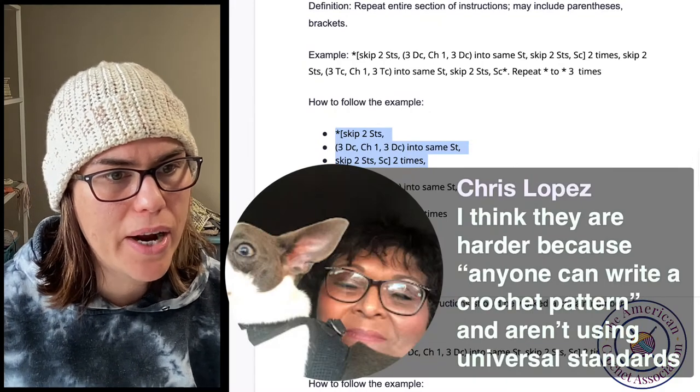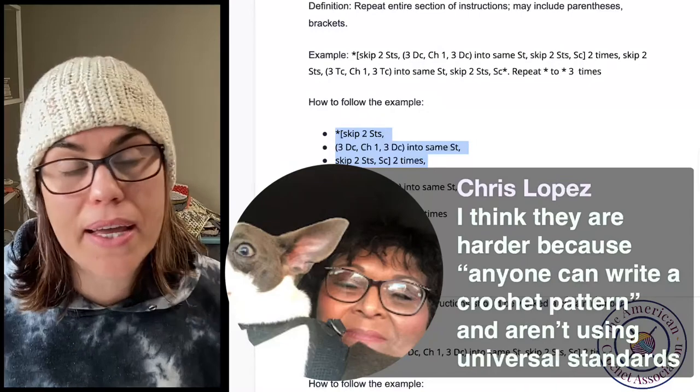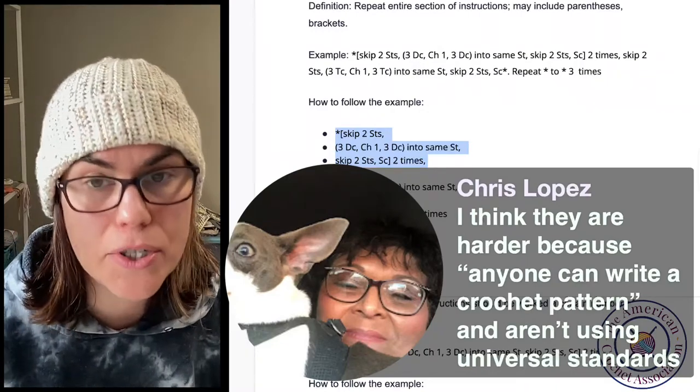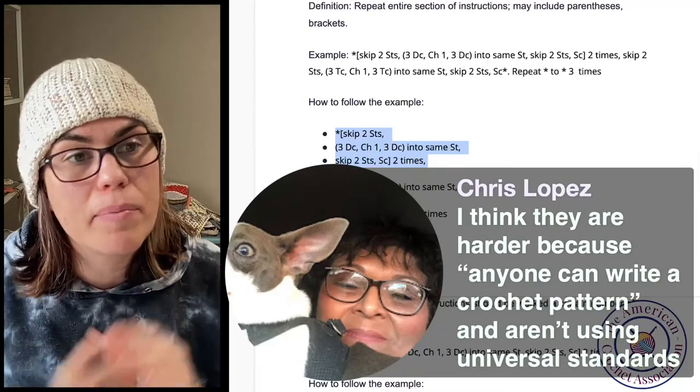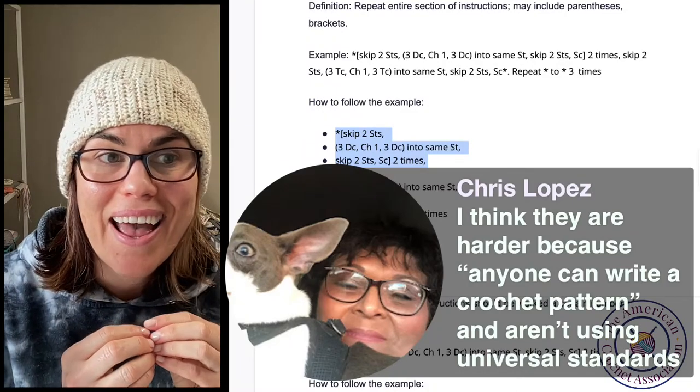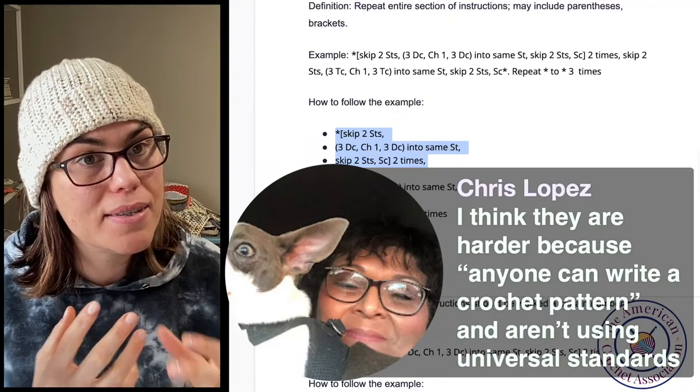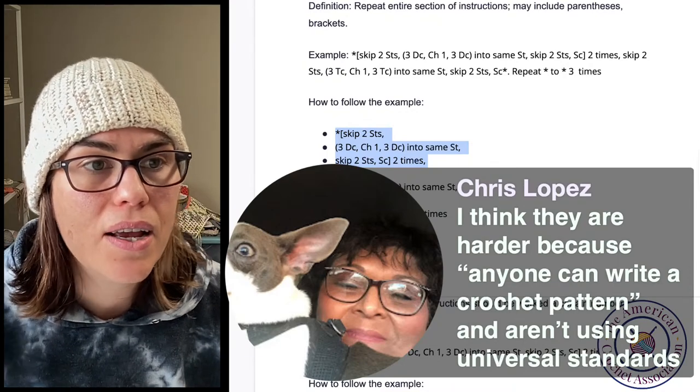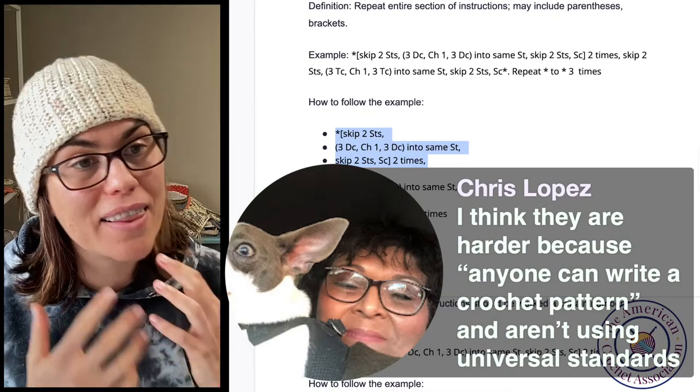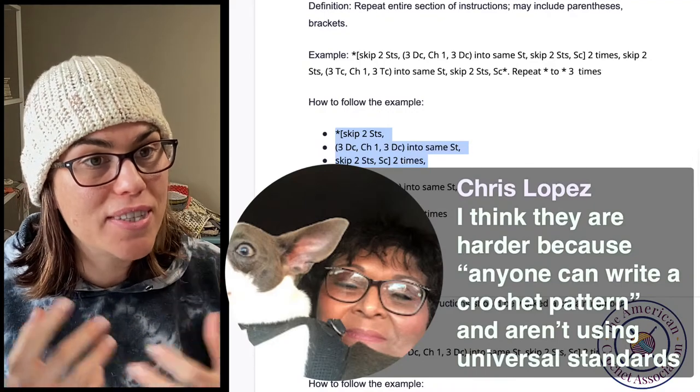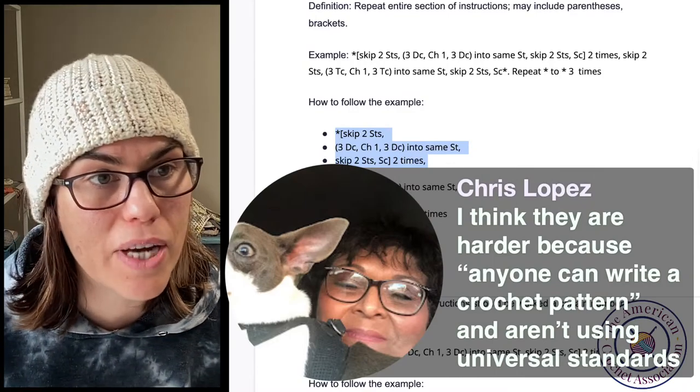Chris Lopez, I think they are harder because anyone can write a crochet pattern and aren't using universal standards. Yeah, sometimes I've even seen crochet patterns where every single thing is written out. And so it's like, I understood exactly what you meant, but really this could have been two lines of instructions, but you've made it 10. So it's not that it's hard for me to understand what you're saying, but maybe there could be a better way to simplify. So I don't fault anyone for trying to share their creativity with the world at all. I love that. And I love that in the crochet world. So really whenever I share things like that, hopefully it's just something that will really make a positive difference, not only in the lives of people who write crochet patterns, but also in the lives of people who read crochet patterns.